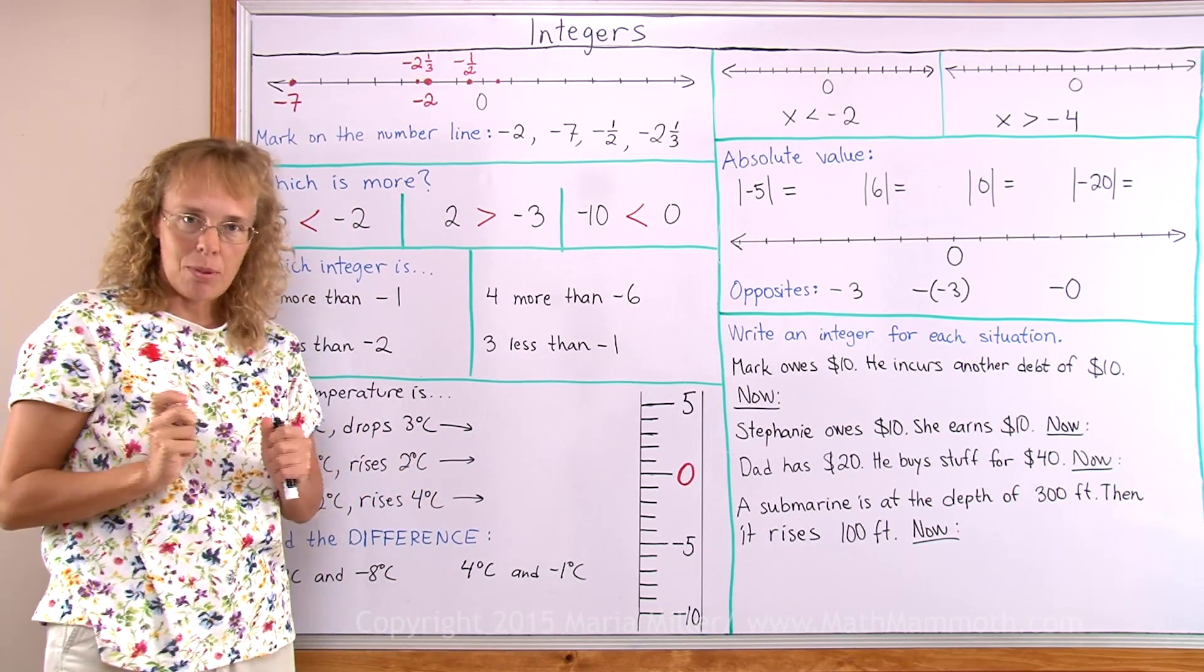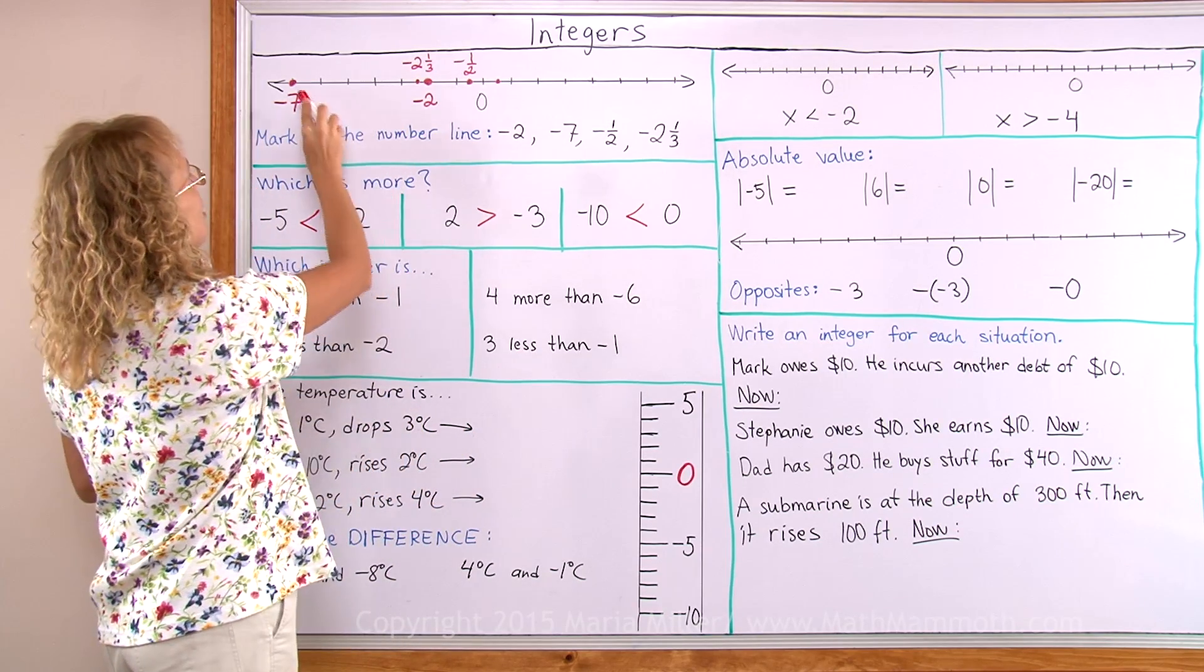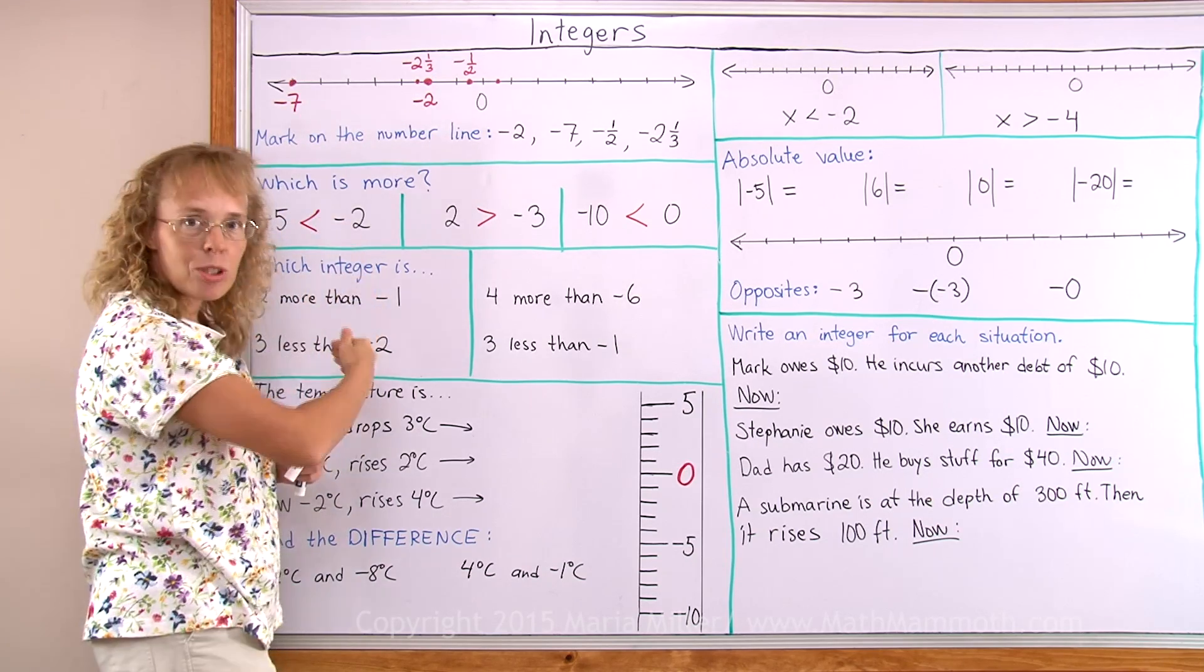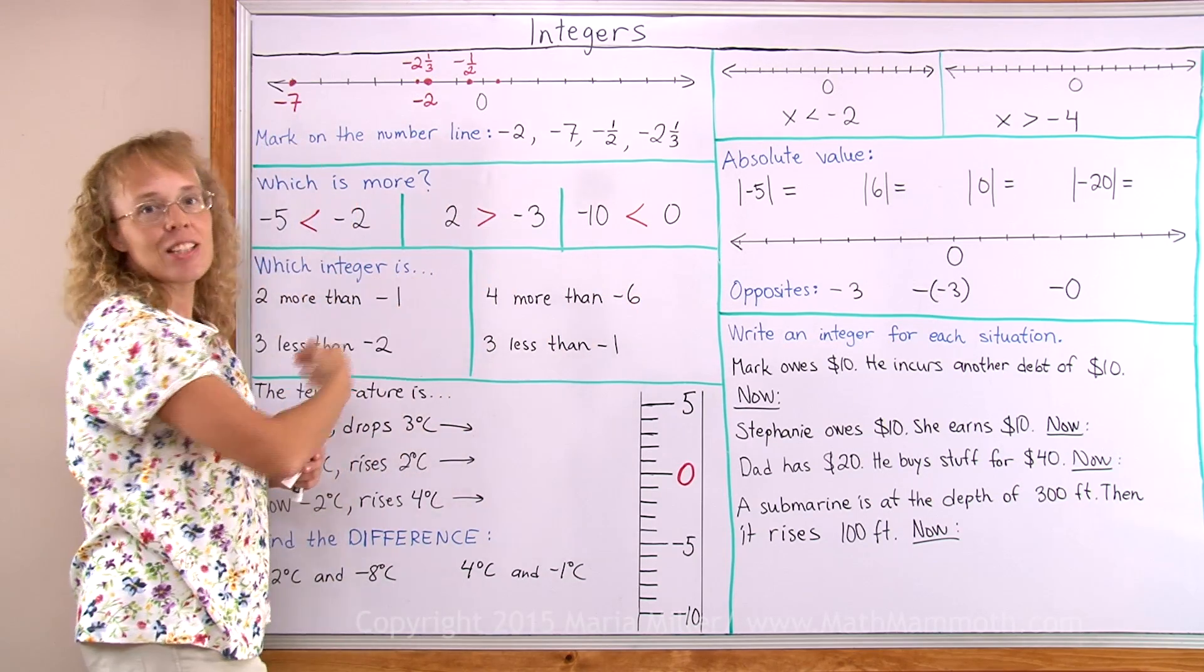Basically, on the number line, if you have two numbers on the number line, like negative 7 and negative 2, whichever number is more to the right is the bigger number.